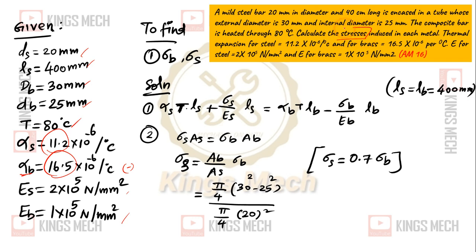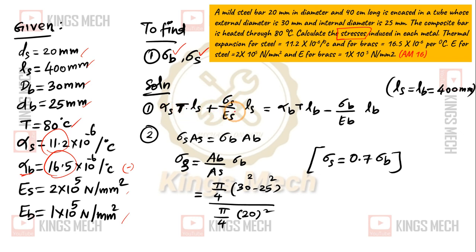What we need to find is stress induced — stress of brass, sigma B, and sigma S. The formula is: alpha T into L plus sigma by E into L. This is the negative side and this is the positive side. That is the first step.